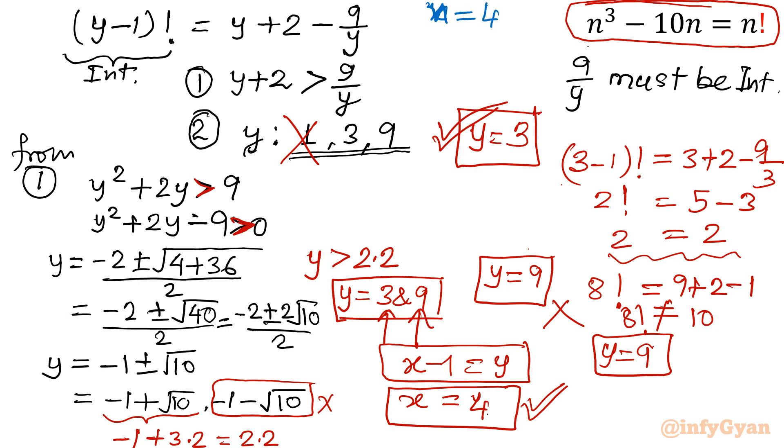So that value will be 4³ - 10 × 4 equal to 4!. 64 - 40. 4! is 4 × 3, 12, 12 × 2 is 24. So yes, 24 = 24. Hence verified.